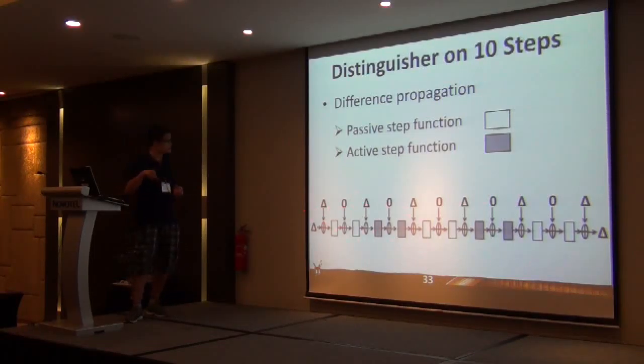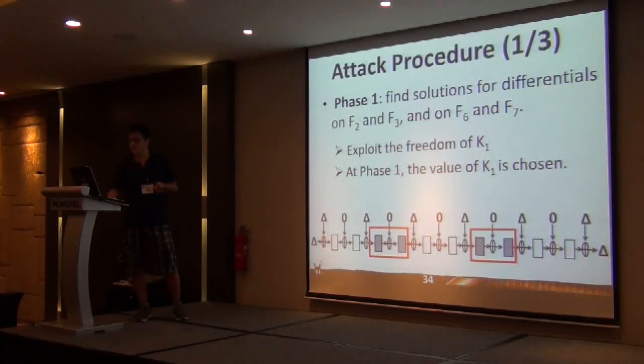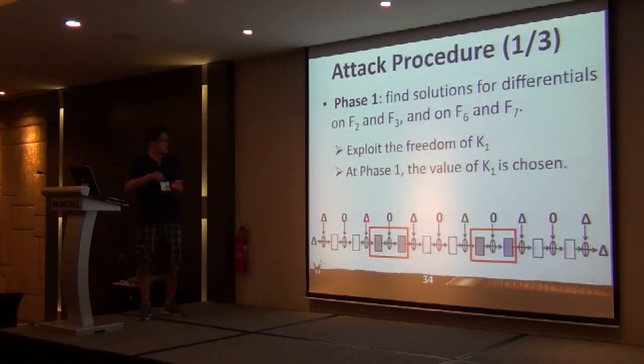Before that, I give a definition. We propose a random difference distinguisher. To make this simple, I'll show what we exactly do on LED-128. For random difference delta, we set K1 difference to 0 and we try to find a solution. In the ideal case, we need to do the full computation.